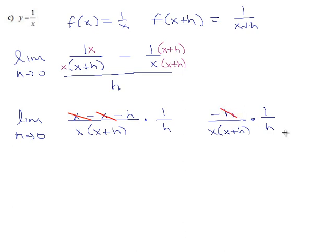The h's cancel. So, now we're going to do a limit as h goes to 0, minus 1 over x, x plus h.